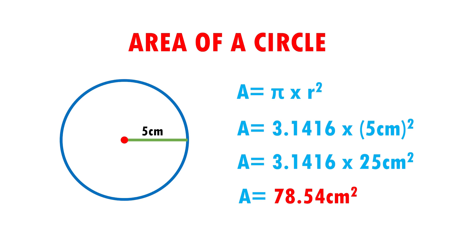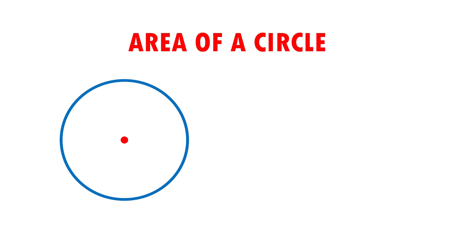Very easy, right? Let's see another example. Here I have a circle with a diameter of 18 centimeters. First, I put the formula: Area equals pi times radius squared.